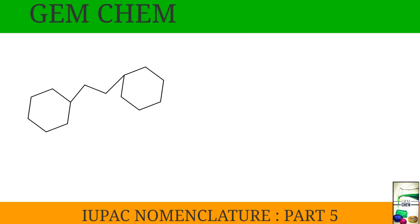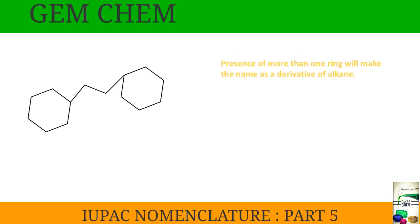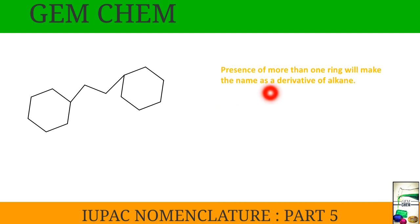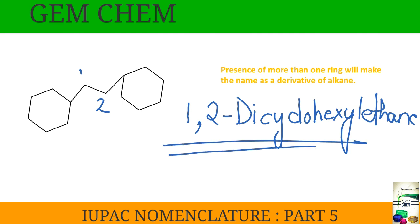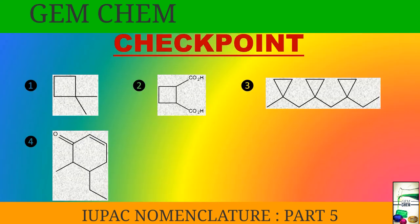Now, the presence of more than one ring makes the name a derivative of alkane. This is the most straightforward case: with 1 and 2 carbons connecting two cyclohexyl groups, we write it as 1,2-dicyclohexylethane. Now we will go for the checkpoint — there are 4 molecules given, try to solve them. Take a screenshot. That is all for today. Thank you for watching — hope it was helpful. Do not forget to like, share, subscribe, and comment.